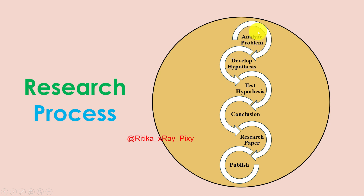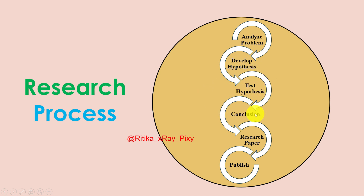The simple research process involves: first, analyze the problem and develop the hypothesis. After that, test the developed hypothesis. Then analyze the results, draw the conclusion, write down the research paper, and publish it.